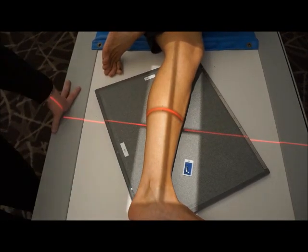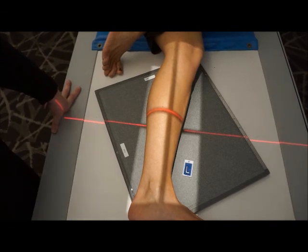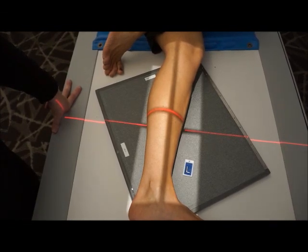If you clip the malleoli or the knee joint, you are going to be repeating this particular position. So this is a two-view lower extremity or tib-fib.